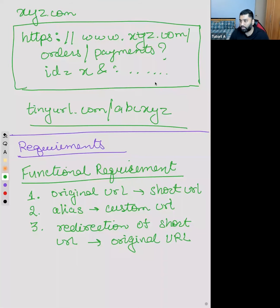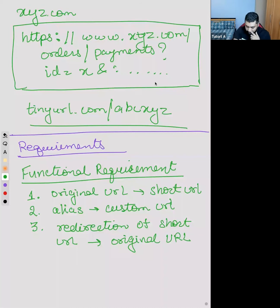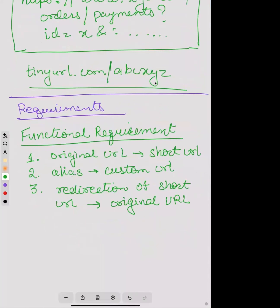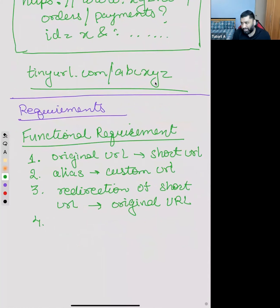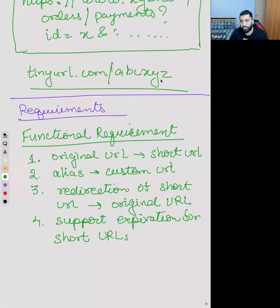The fourth thing would be that it should support expiration - support expiration for short URLs. Anything else? There might be other requirements. While discussing this part of the interview, it's okay to not think about whether it is useful or not. If you feel it's a feature you'd want, discuss it. It tells the interviewer about the breadth of your understanding.